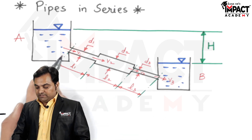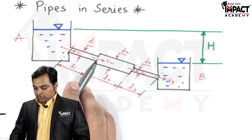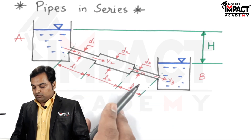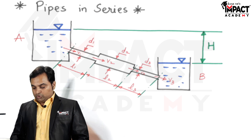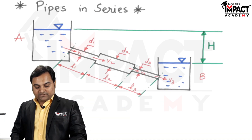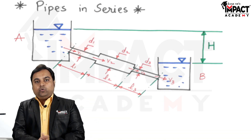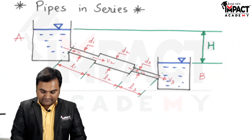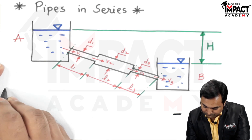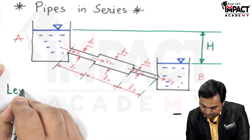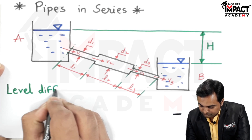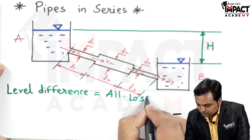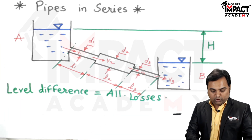So, how many losses are there in total? We can count: there are 4 minor losses and 3 major losses due to friction. All these losses are the resistance which we have to overcome, and that is indicated by the level difference H. Therefore, the level difference is equal to the sum of all losses.